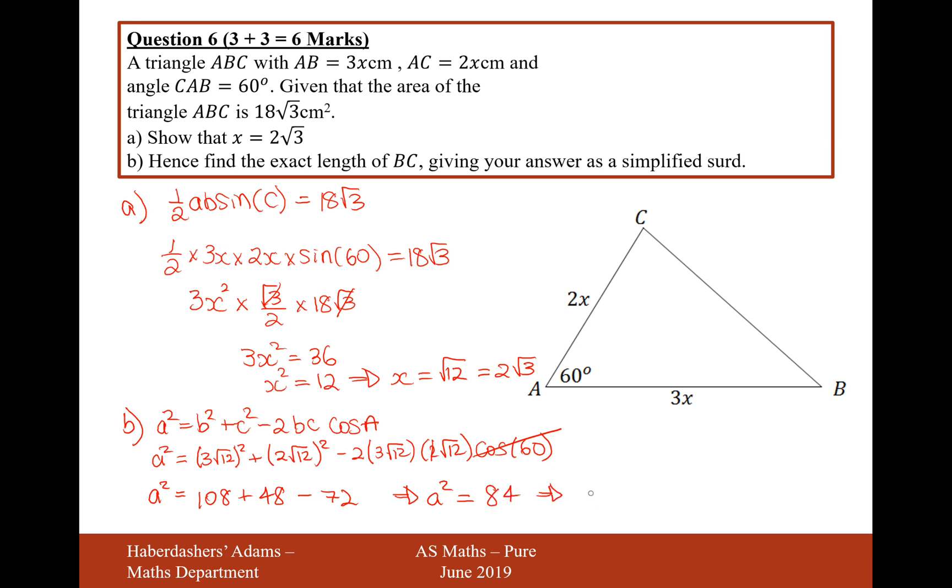So therefore it's going to be a equals root 84. Now what can we do here? We can pull a 4 out of this so we can call it 2 root 21. And there we are. That's the answer for question 6.